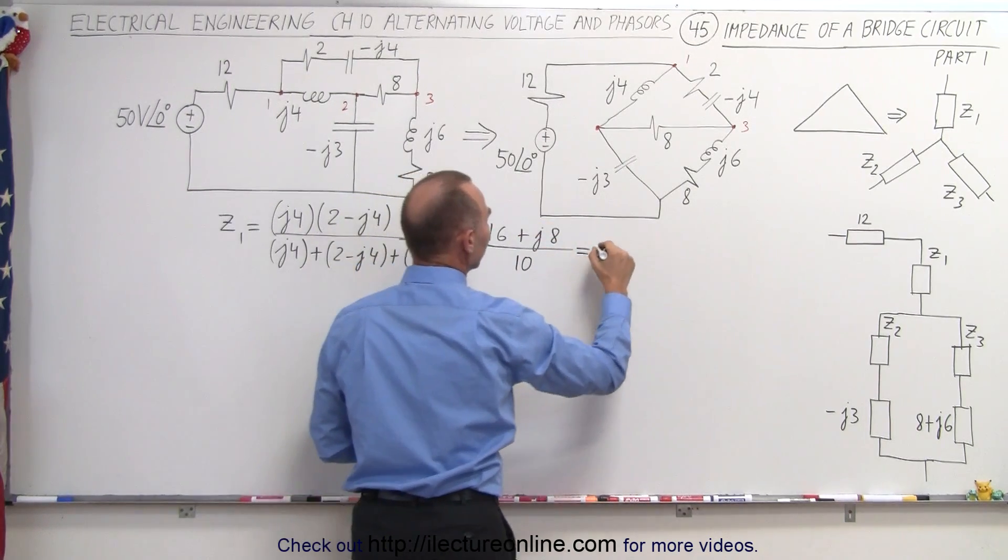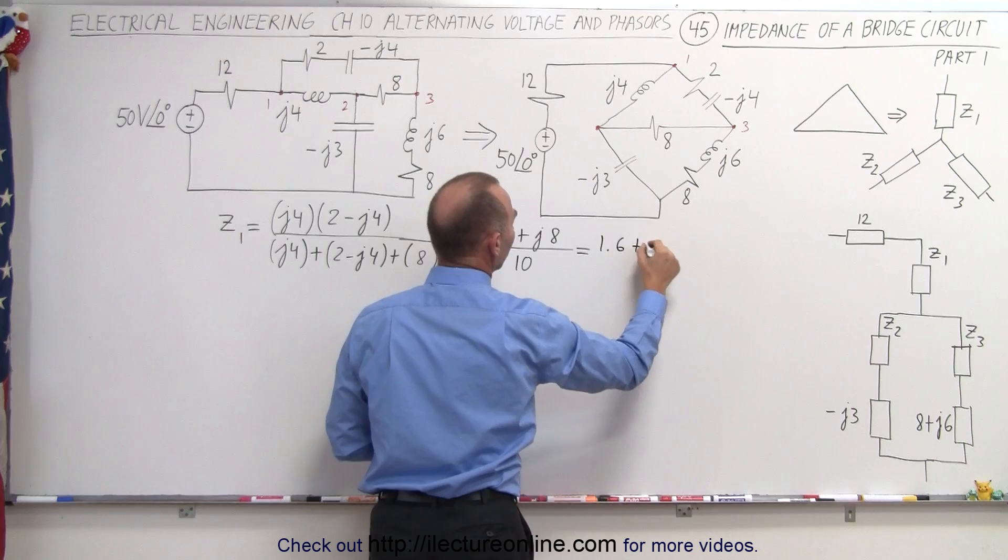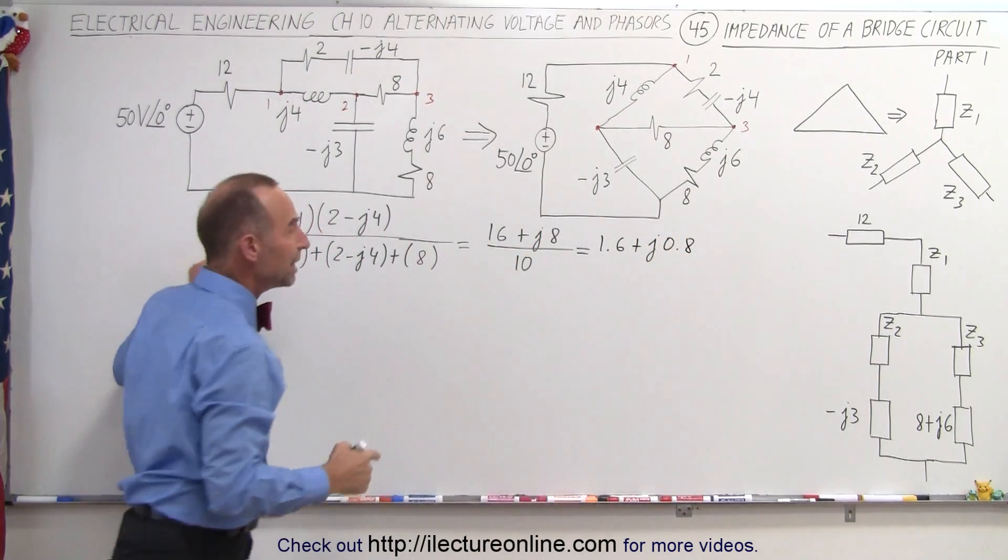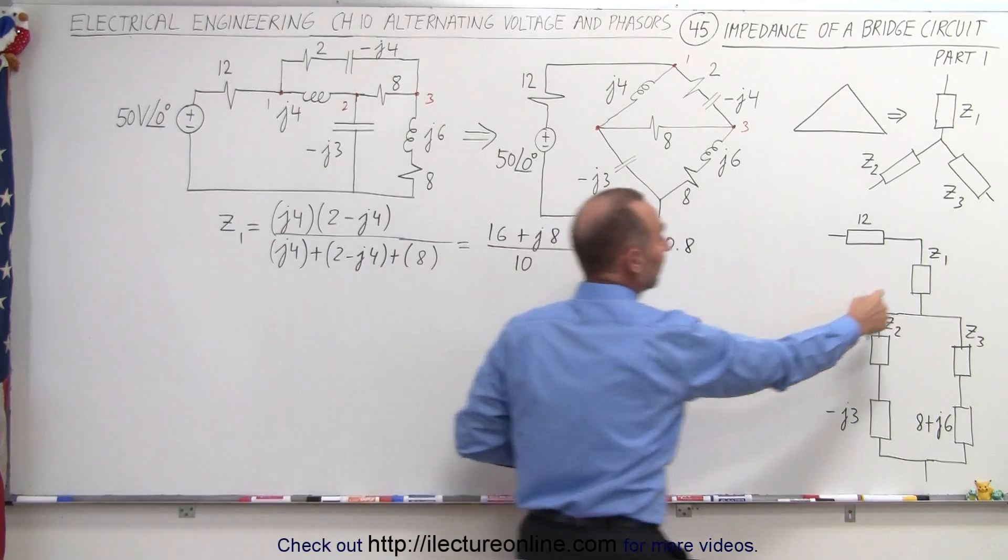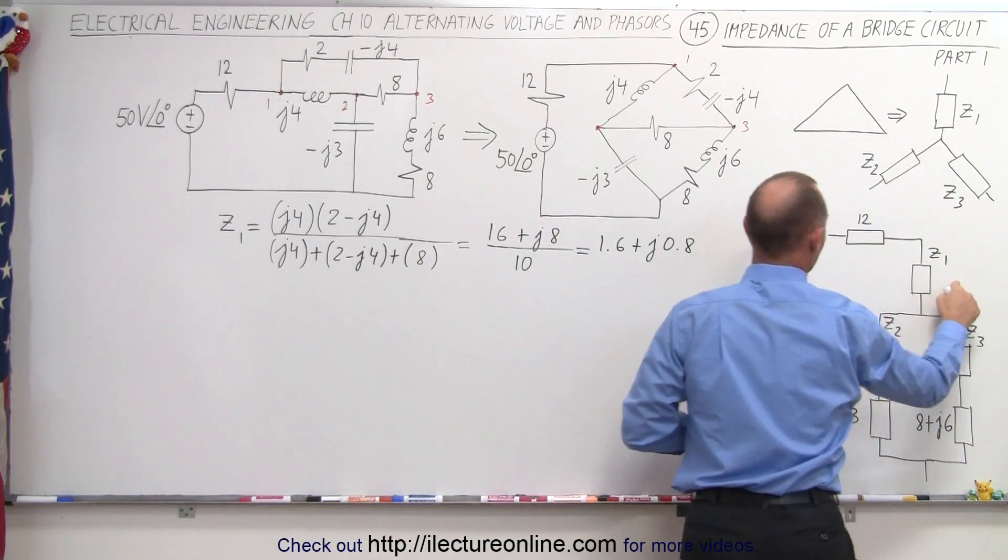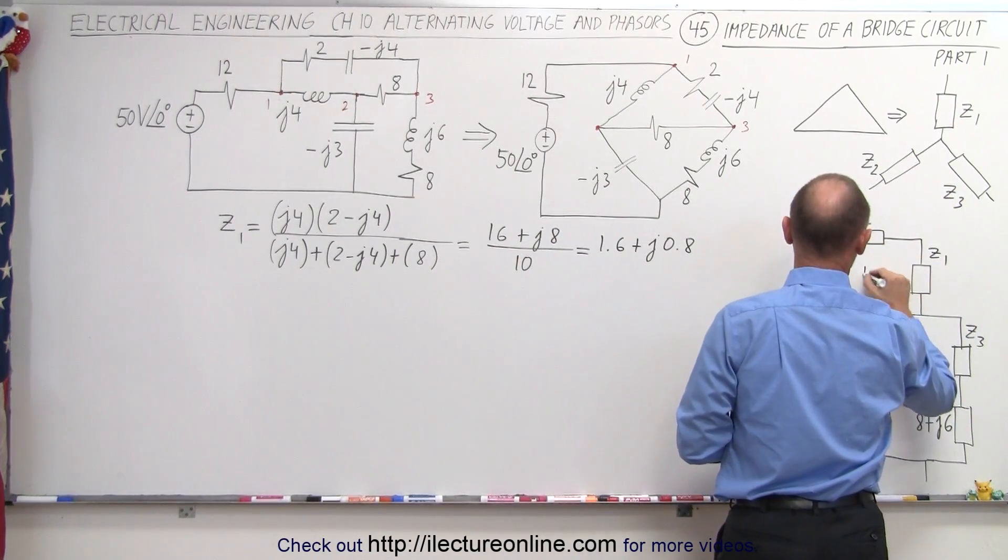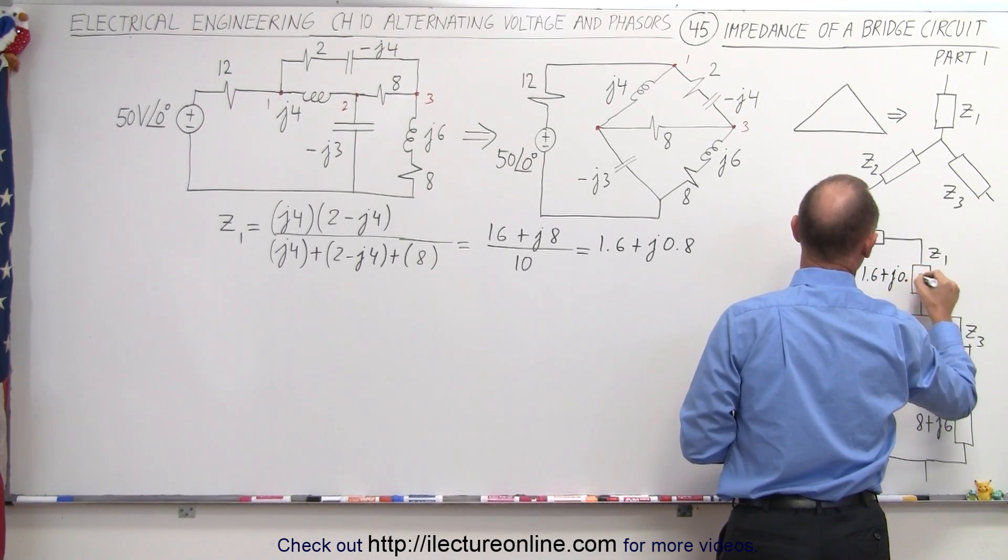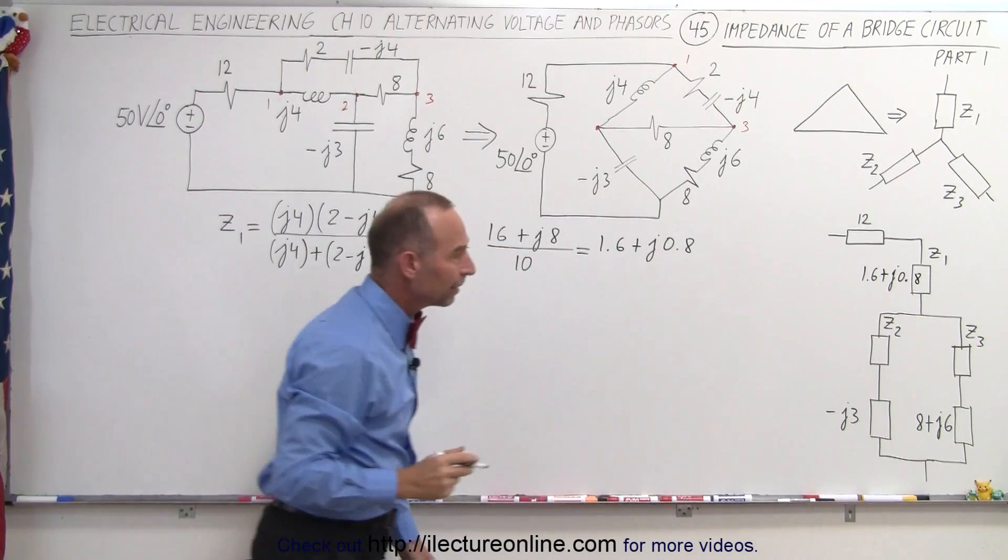And if we divide that into the numerator, it gives us 1.6 plus J0.8. So that becomes the impedance of this portion of the Y. And so let's plug that in here. That gives us 1.6 plus J0.8.